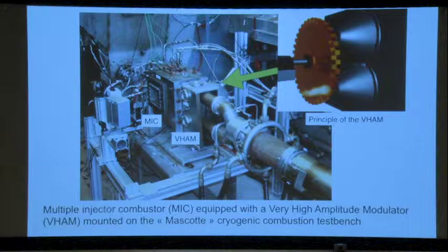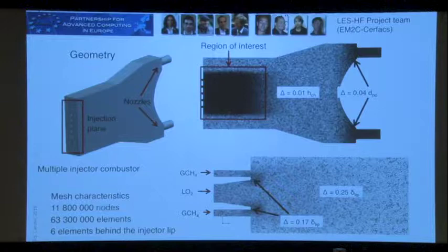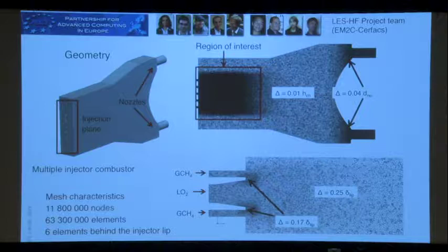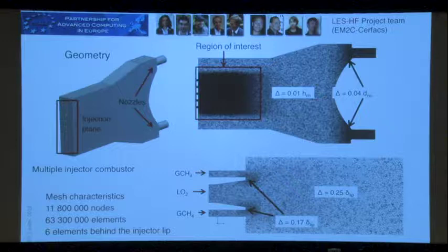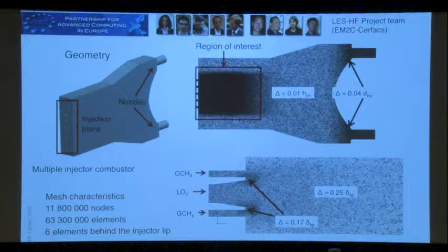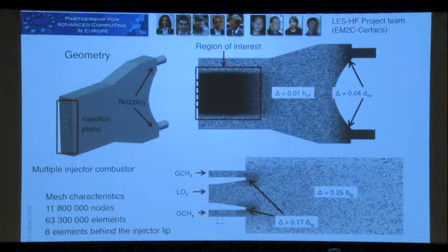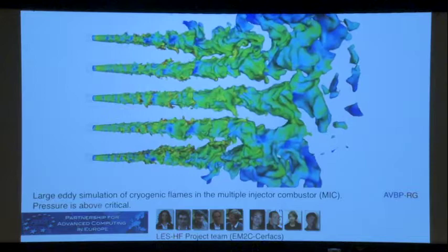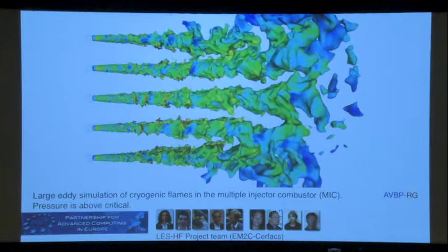Of course you also want to do calculations of the same situation. Here you have five injectors with a very fine grid to represent the flames. You have liquid oxygen here and gaseous hydrogen here; the lip is very small, so you need many points because the flame is stabilized very close to the lip. One nozzle is blocked while the other is open, and vice versa. This shows the system without acoustics — just the normal development of the jets using LES: five flames, each different from the others.